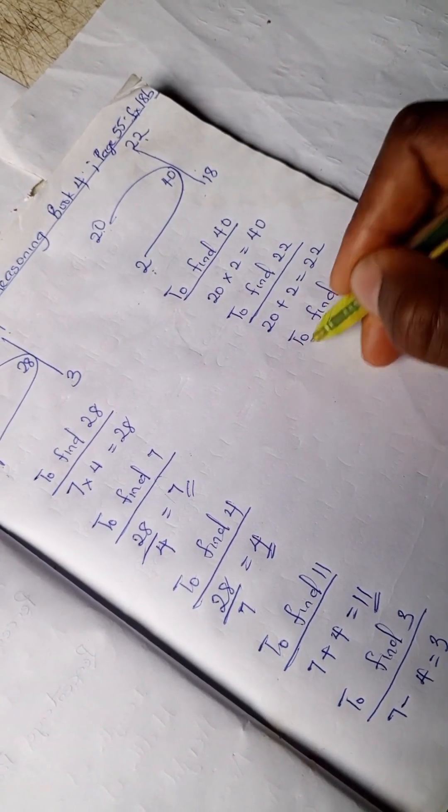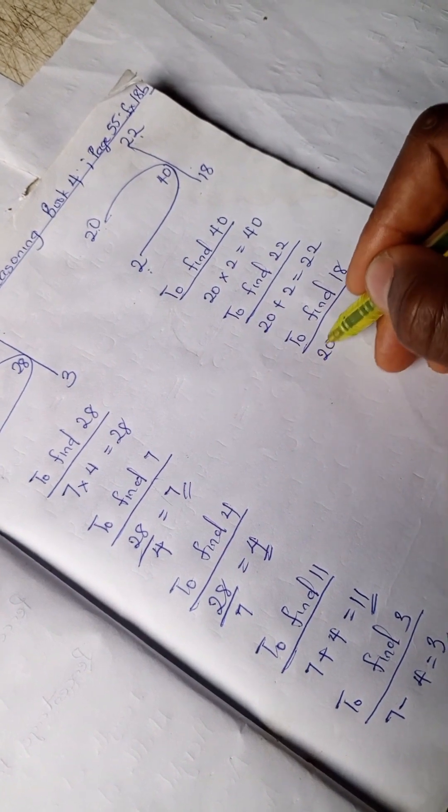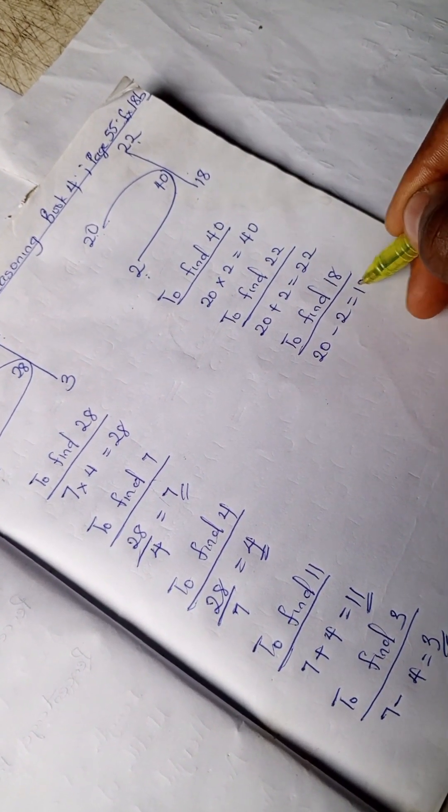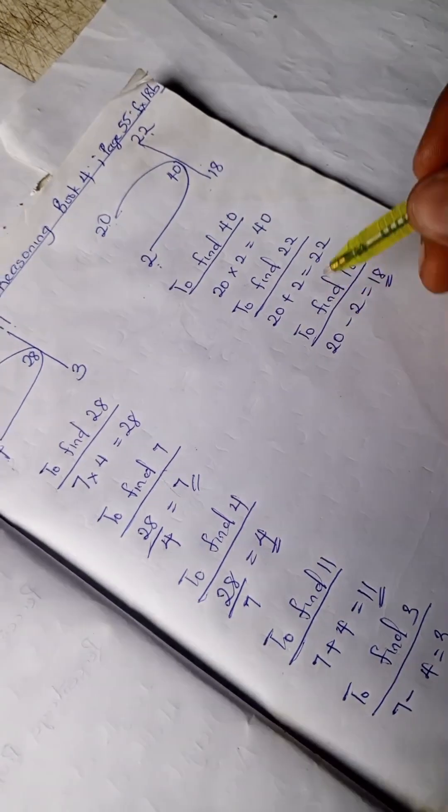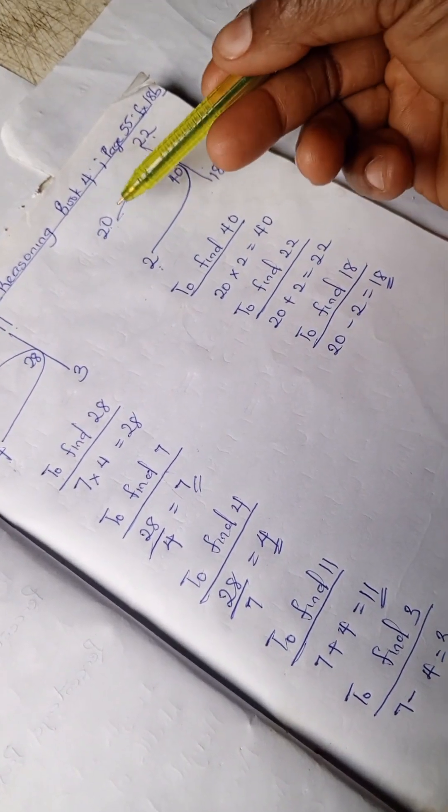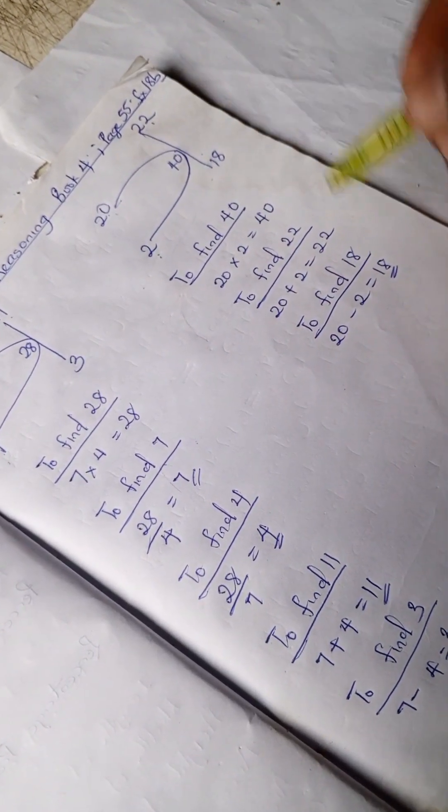And to find 18, we have 20 minus 2 is 18. Right, so we can also find 20 from either of this.